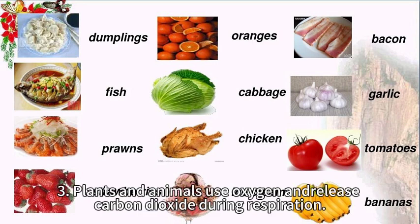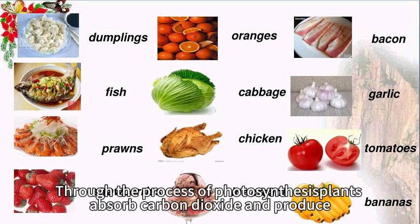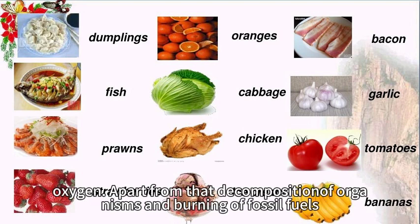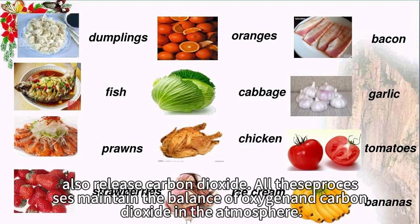Plants and animals use oxygen and release carbon dioxide during respiration. Through the process of photosynthesis, plants absorb carbon dioxide and produce oxygen. Apart from that, decomposition of organisms and burning of fossil fuels also release carbon dioxide. All these processes maintain the balance of oxygen and carbon dioxide in the atmosphere.